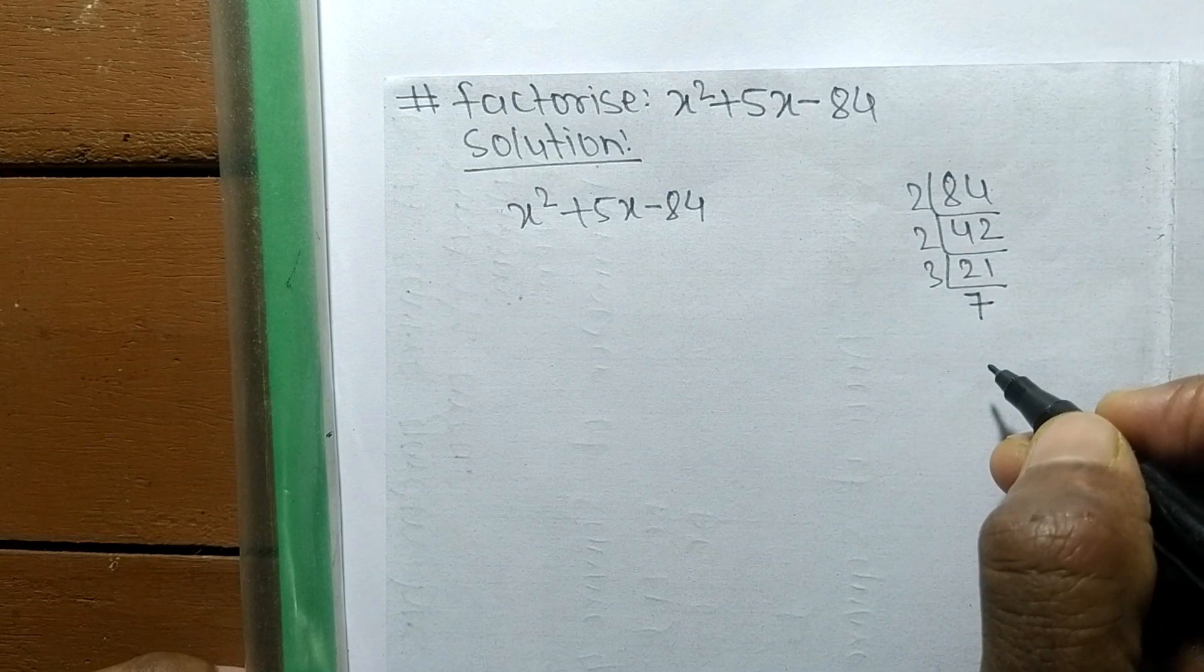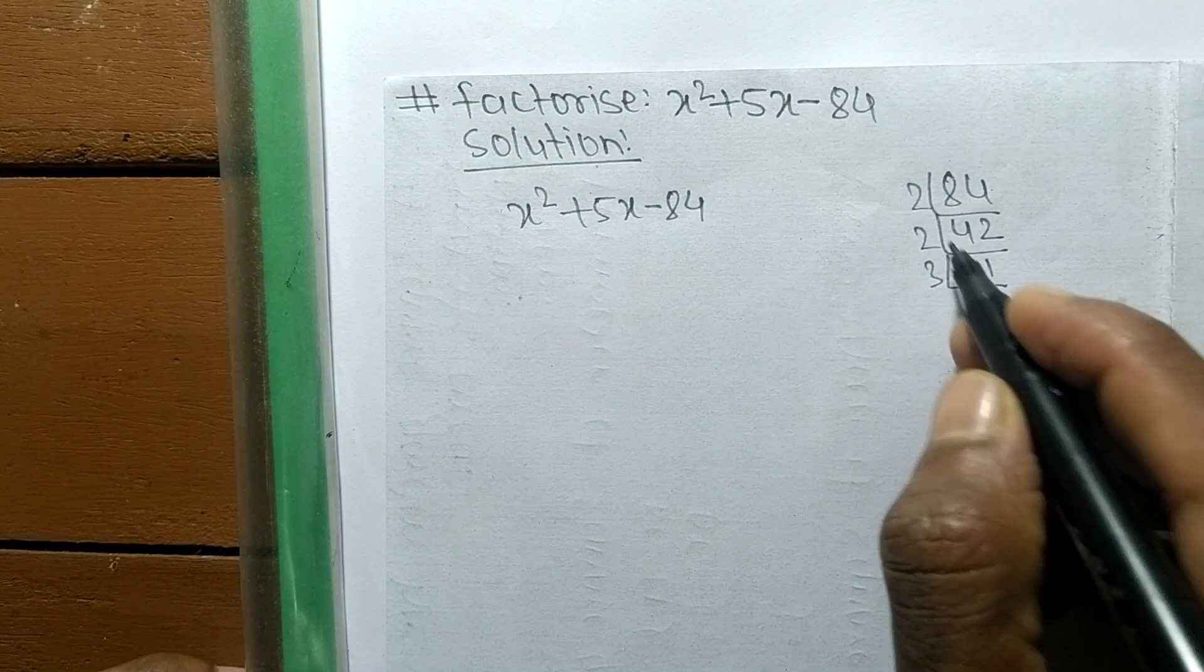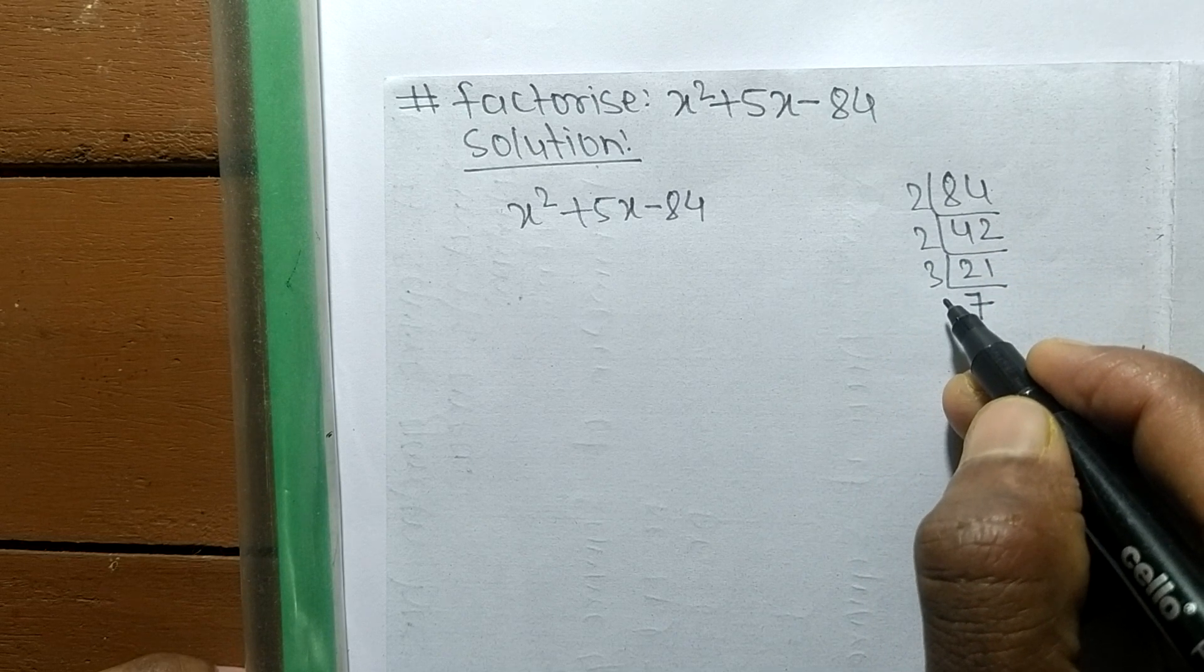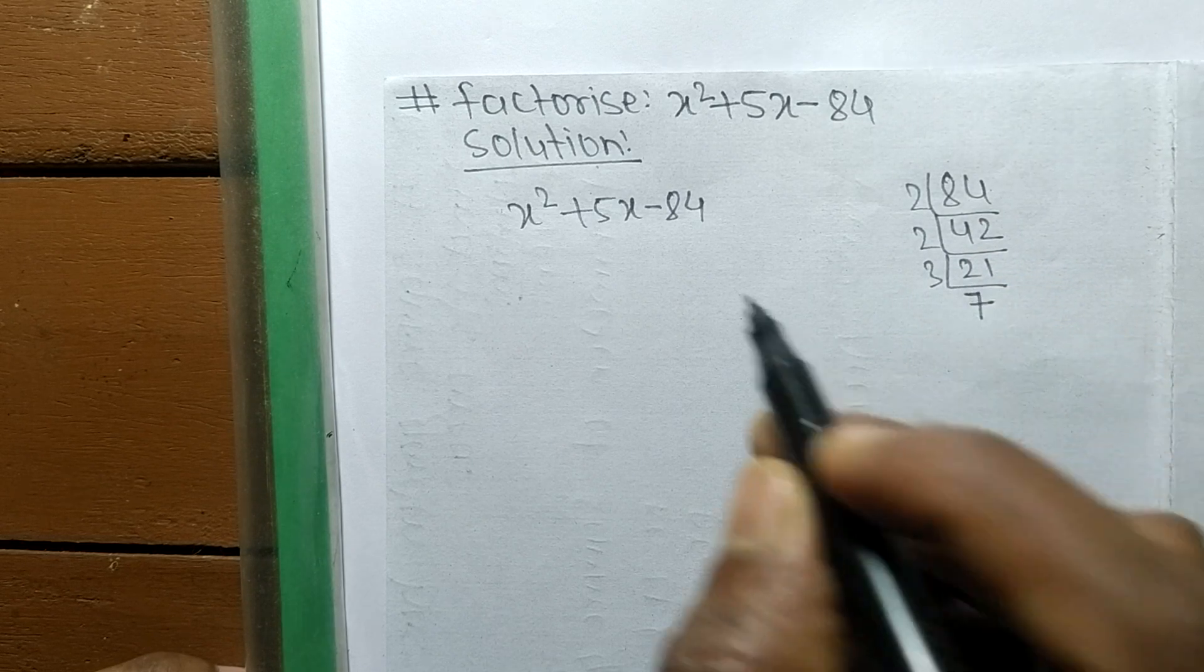By multiplying within these numbers, we have to find such a combination that by adding or subtracting gives us +5.